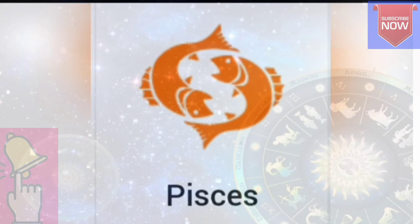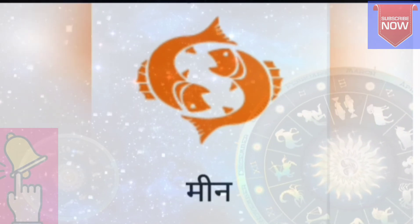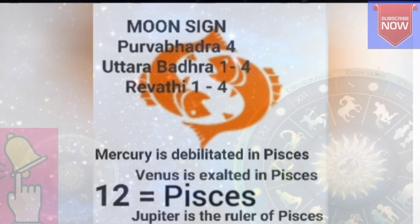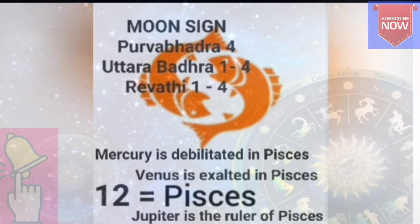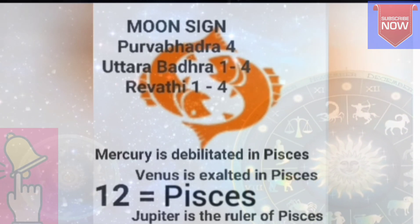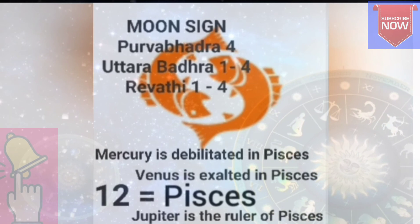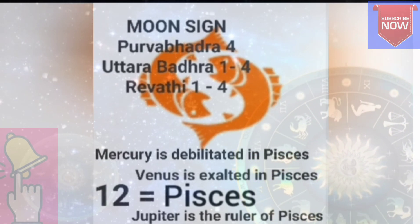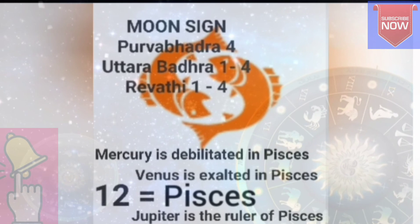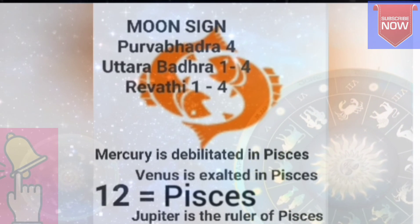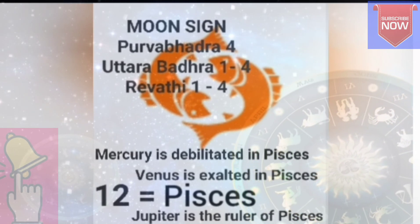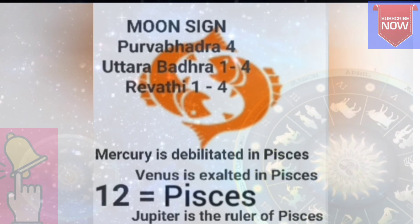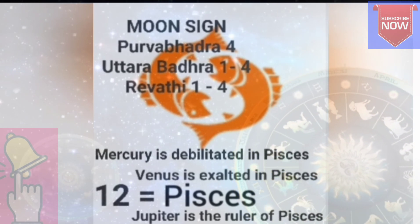Pisces, number 12, is called Meena Rashi in Hindi. This Rashi is ruled by Jupiter. Venus is exalted in Pisces and Mercury is debilitated in Pisces. The nakshatras in Pisces are: Purva Bhadrapada 4 Pada, Uttara Bhadrapada 1 to 4 Pada, and Revati 1, 2, 3, and 4 Pada. This is the end.